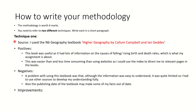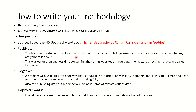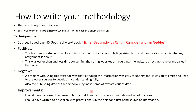Finally, we look at improvements. You could have increased the range of books that you read to provide a more balanced set of opinions — it's that balanced set of opinions that is the key importance of the sentence. You could also have written to or spoken with professionals in the field for a first-hand source of information, which would have been an improvement over using a book, because a book is a second-hand source of information.